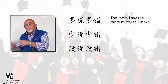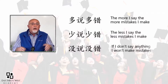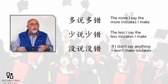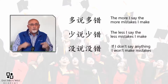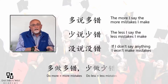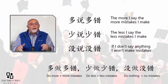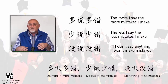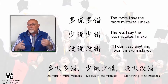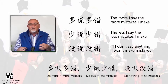多说多错，少说少错，没说没错 — the more I say, the more mistakes I make; the less I say, the fewer mistakes; if I say nothing, I won't make mistakes. They also apply it to actions: 多做多错 — the more I do, the more mistakes; the less I do, the fewer; if I don't do anything, I won't make mistakes. This is a natural reaction to being punished for every mistake, but it's totally different from Western culture.